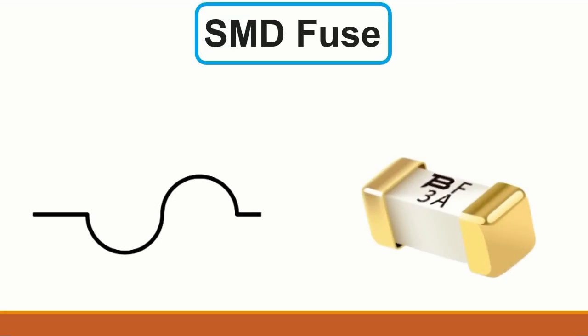Then we have the SMD fuse. It is empty here because it has no terminals — the fuse has blown. This is its symbol. This fuse is rated at three amps, meaning the maximum current it can support is three amps.